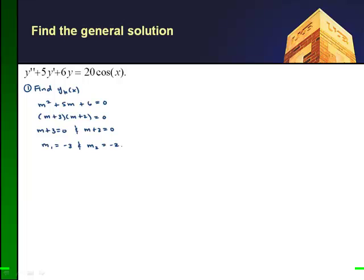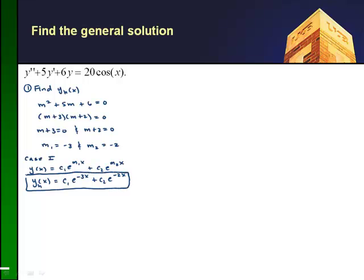And so since I have two real roots, this brings up case 1, which has a solution y of x equals c1e to the m1x plus c2e to the m2x. Now, if I fill in m1 and m2, I get c1e to the minus 3x plus c2e to the minus 2x. So now we have our homogeneous solution yh.